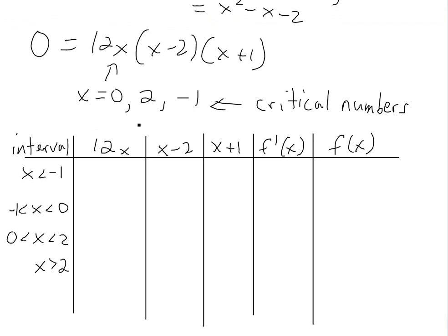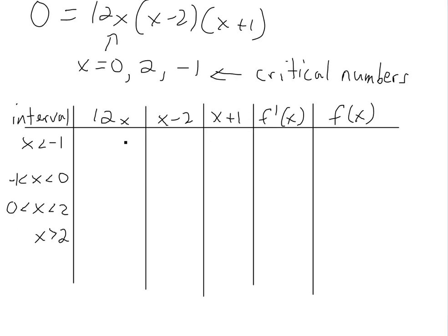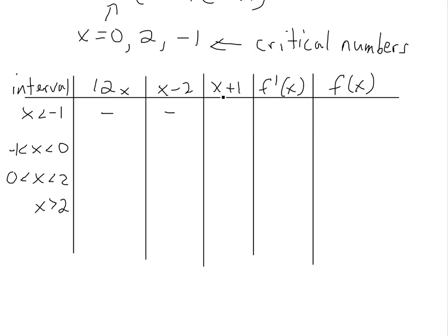When x is less than negative 1, plugging any negative number into 12x gives a negative. For x minus 2, a number less than negative 1 minus 2 is also negative. For x plus 1, since the absolute value of x is greater than 1, for example negative 2 plus 1 is still negative. So we have negative times negative times negative — an odd number of negatives — meaning f prime of x is negative. Therefore f is decreasing on this interval.